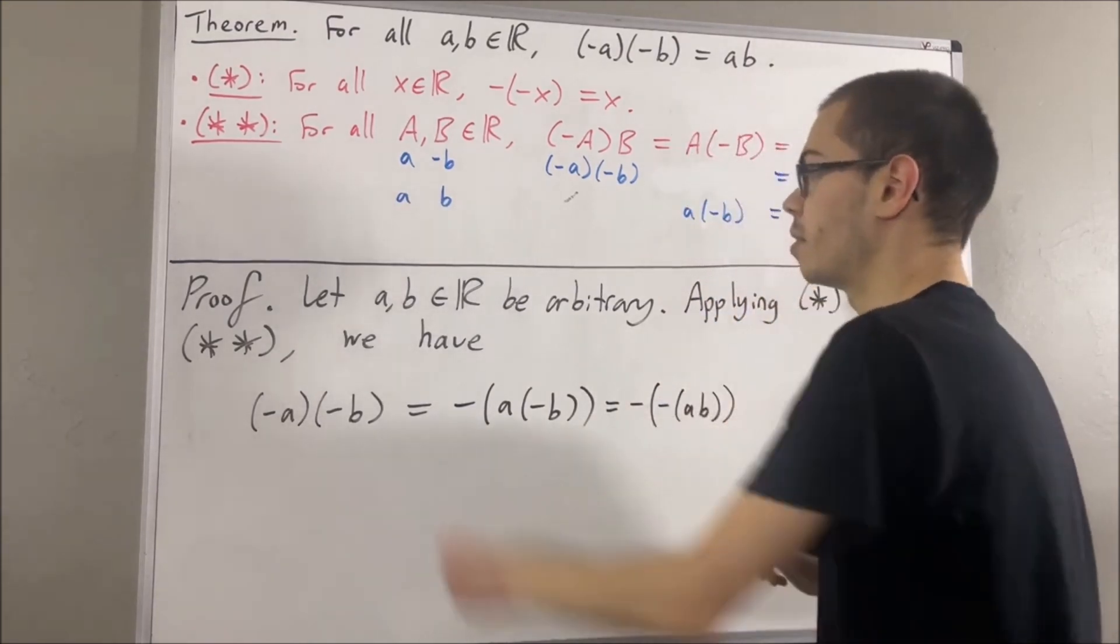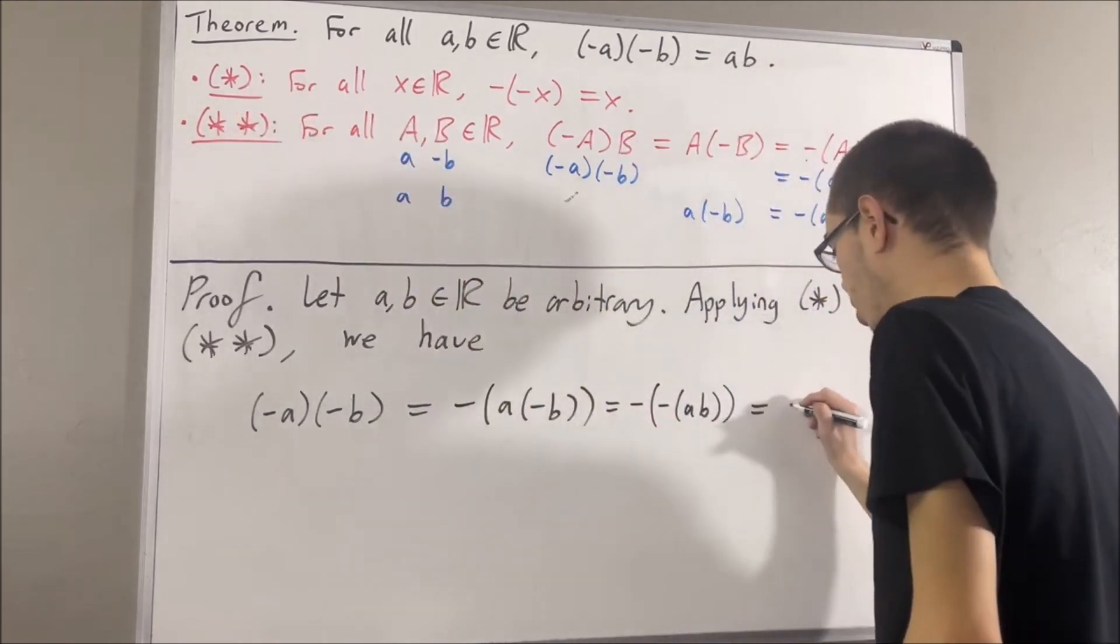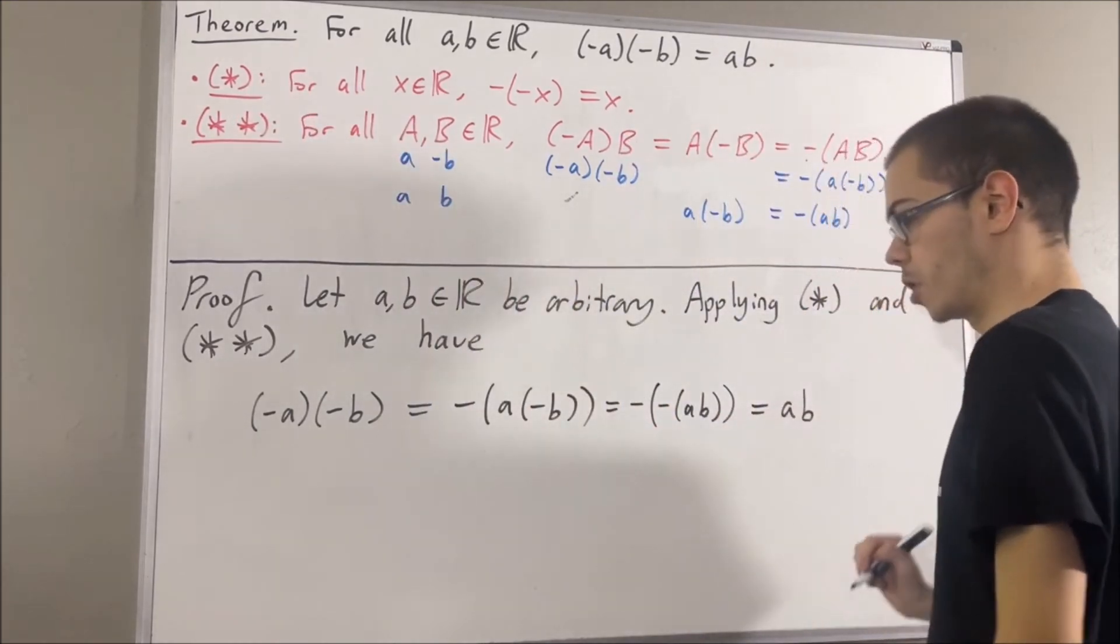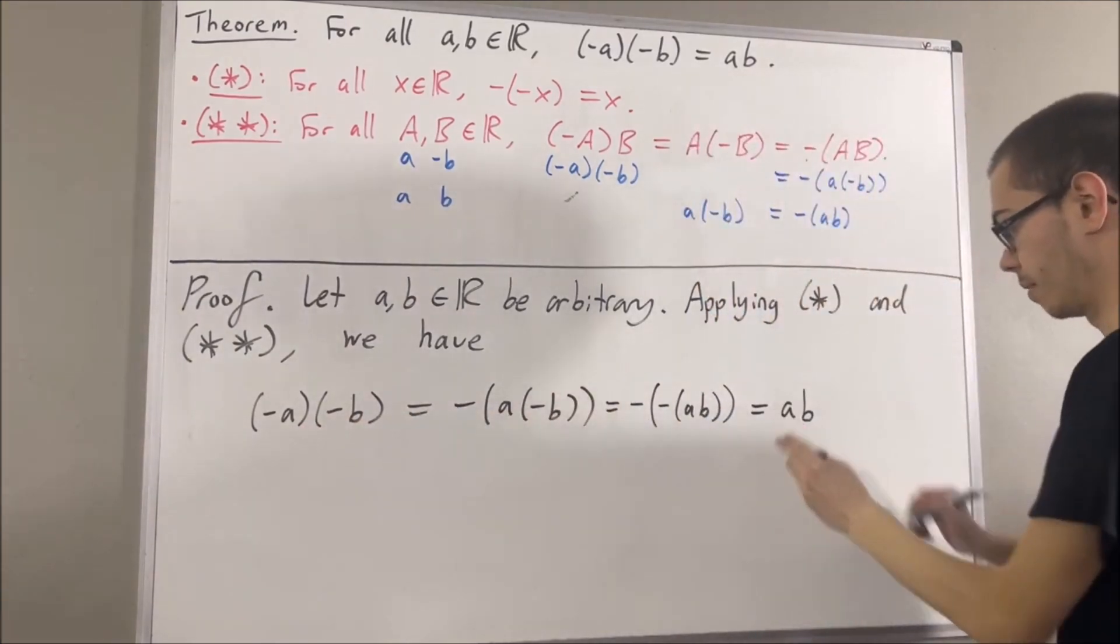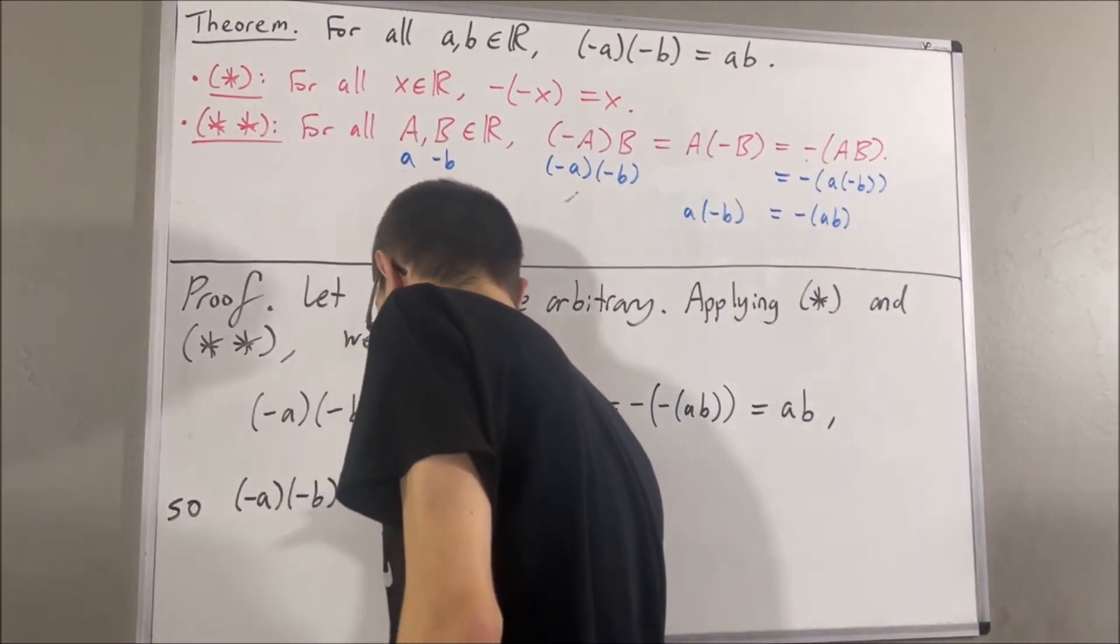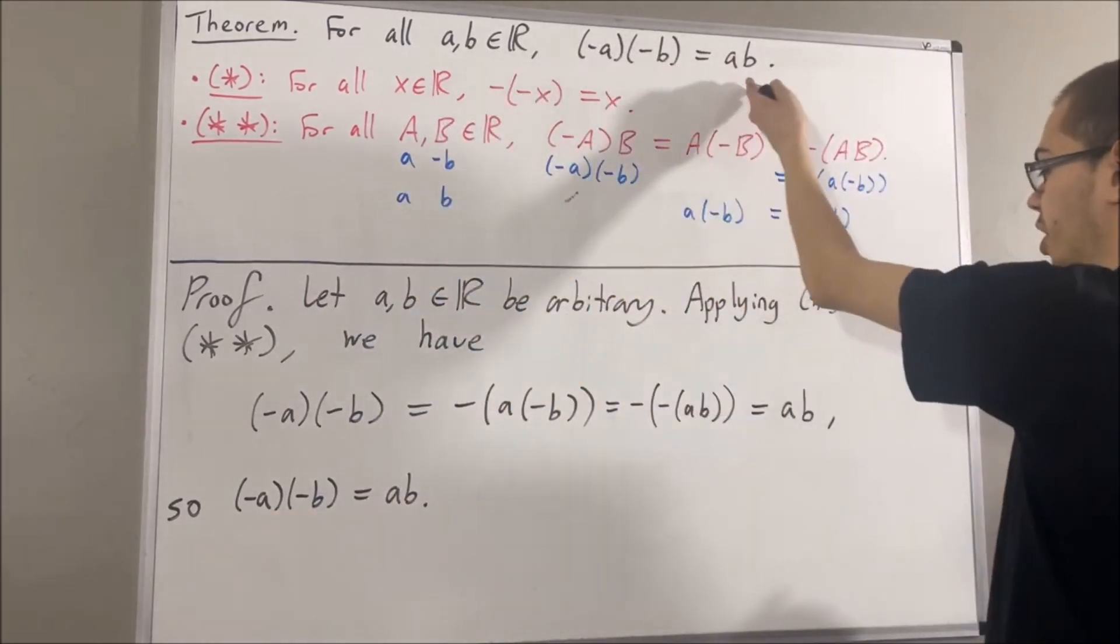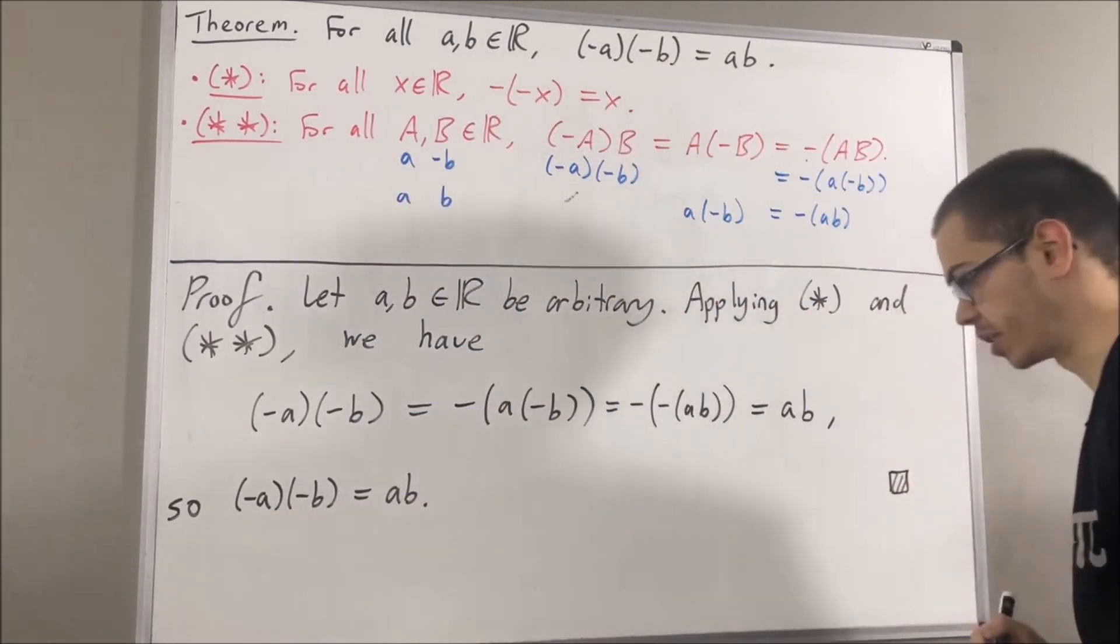And then, by star, this is just equal to AB. So, we have shown the negative of A times negative B is equal to AB. And that is exactly what we wanted to prove. So, this completes the proof.